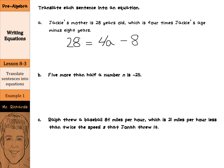Five more than half a number N is negative 25. Let's figure out the half a number N first — that's just going to be one-half times N. Five more than that would be plus five. Is means equals negative 25. So we have: one-half N plus five equals negative 25.